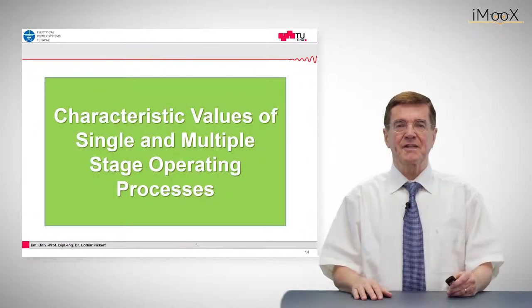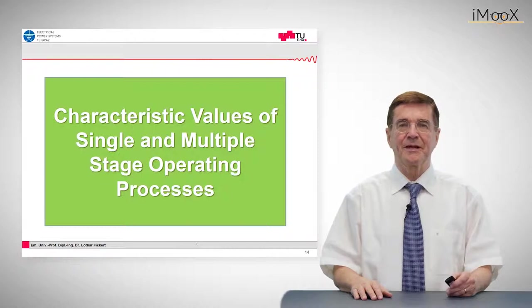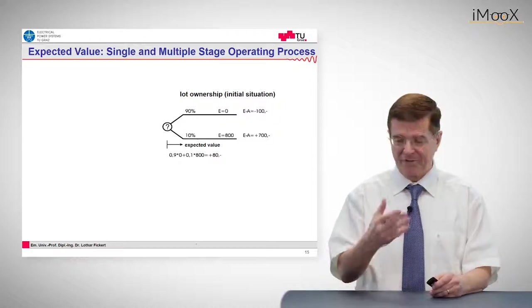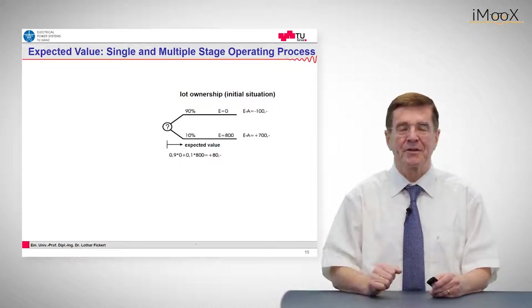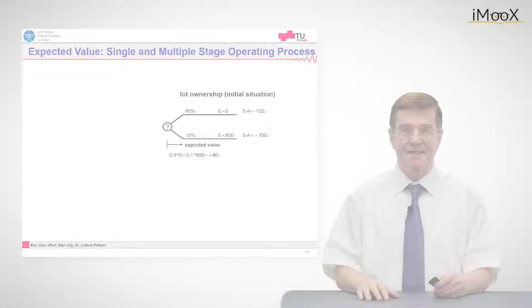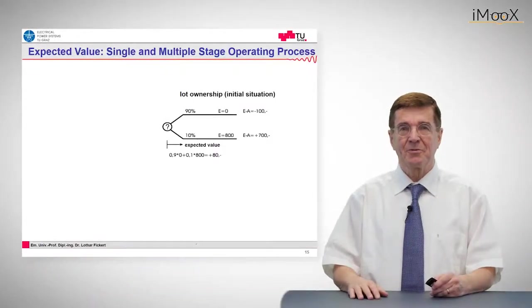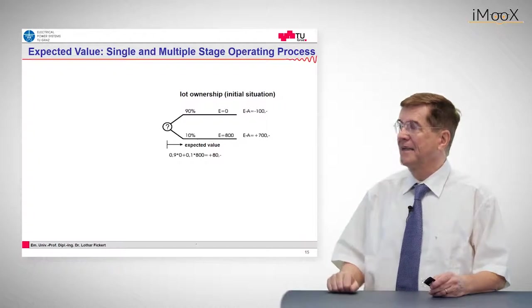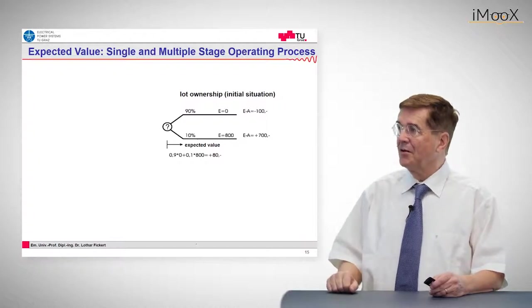Now characteristic values for single and multiple stage operating processes will be demonstrated by an example of a lot. If you buy a lot, before you open it you do not know what is inside.